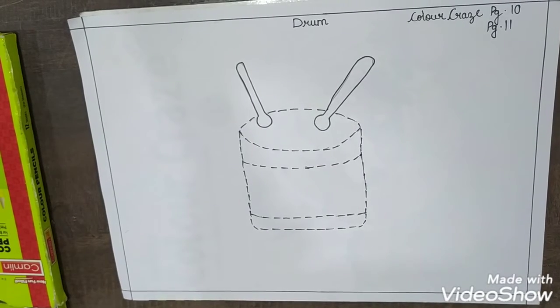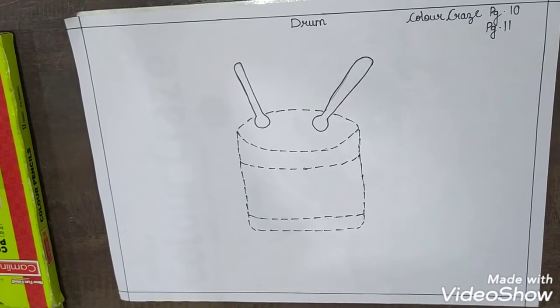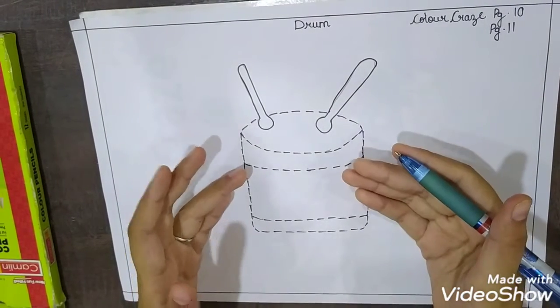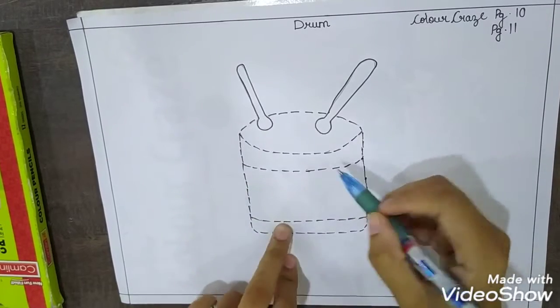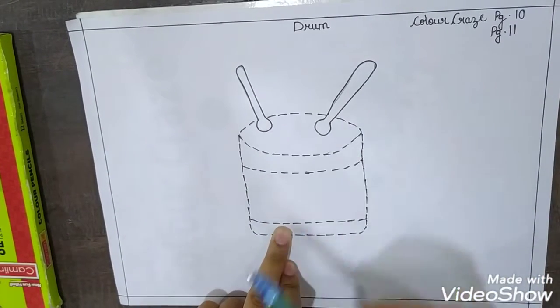So today we are going to draw and color. What you can see? This is drum. Okay. Drum and drumsticks. Okay.